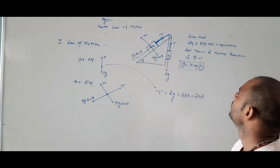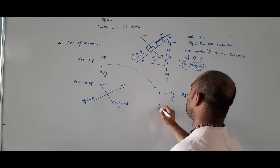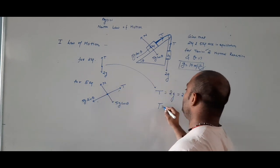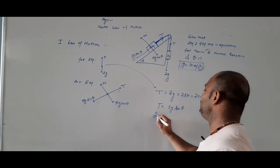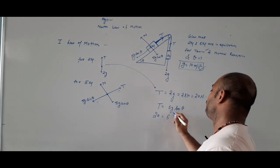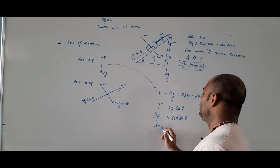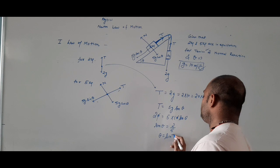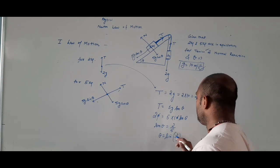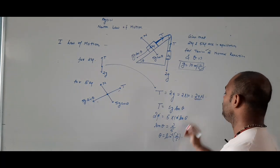Ab doosri cheez nikalte hain. T equals 5g sin theta. T is 20, 5g is 50, so 20 equals 50 sin theta, giving sin theta equals 2 upon 5. So theta equals sin inverse of (2/5).